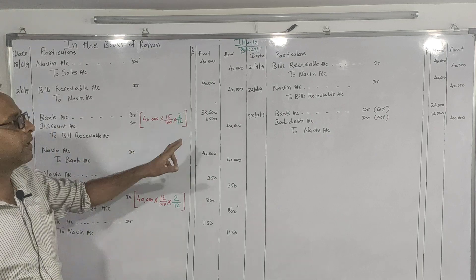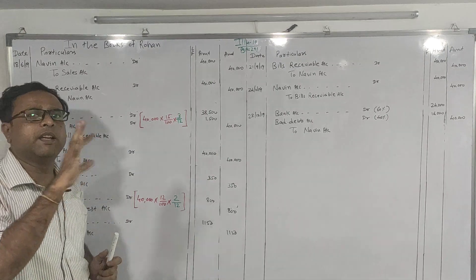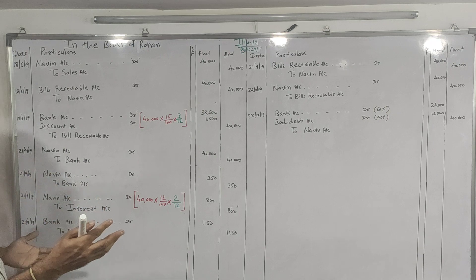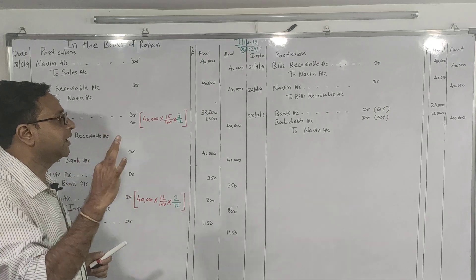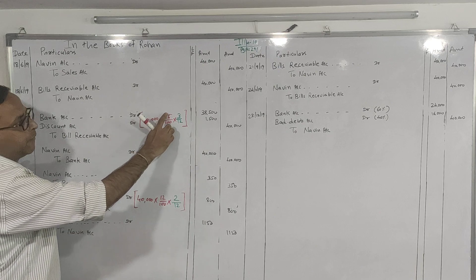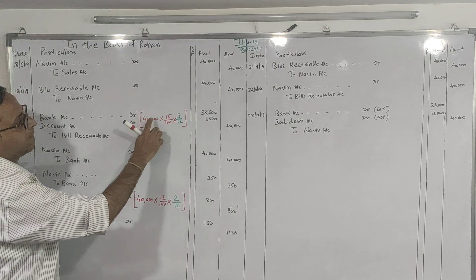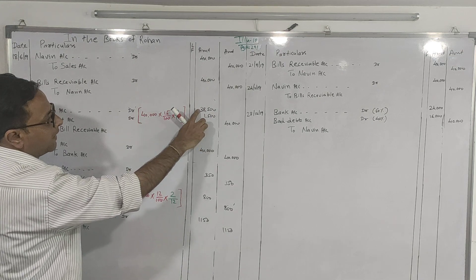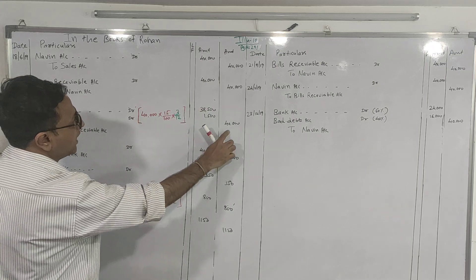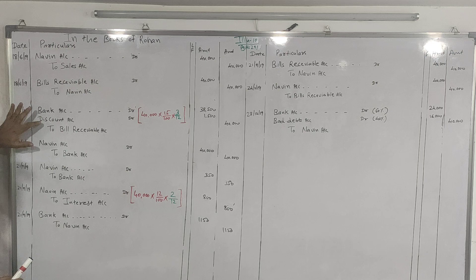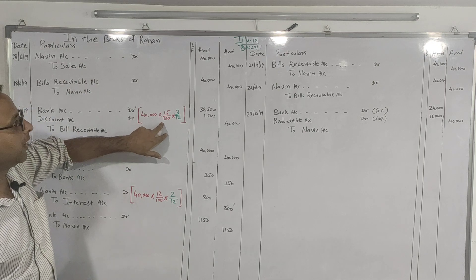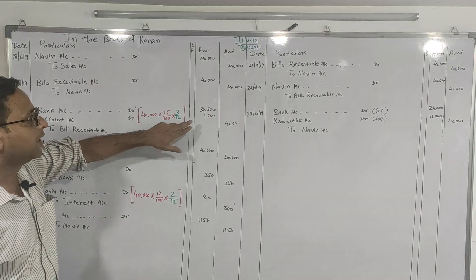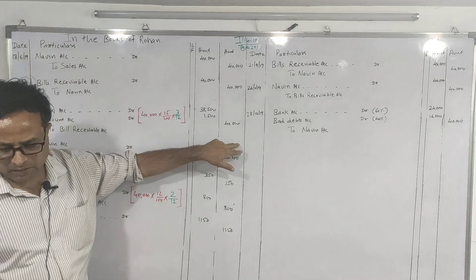The bill is being discounted on the same date, so we have used the bank's money for 3 months. The bank will charge us interest for 3 months: ₹40,000 × 15/100 × 3/12, which gives a discount amount of ₹1,500. The balance amount the bank will pay to us, and the Bills Receivable is ₹40,000. So entry amounts are: Bank ₹38,500, Discount ₹1,500, Bills Receivable ₹40,000.